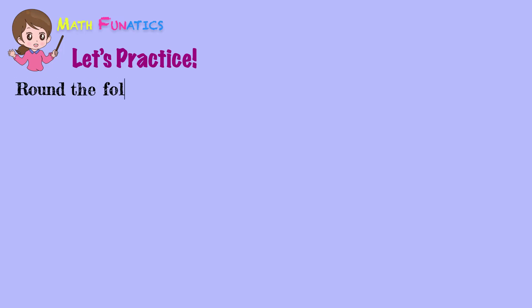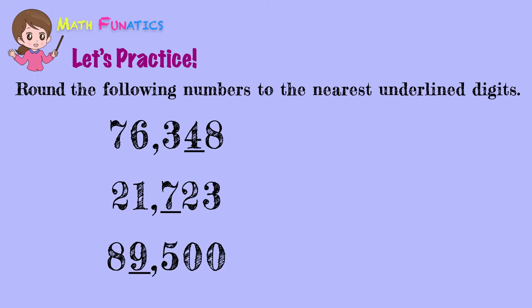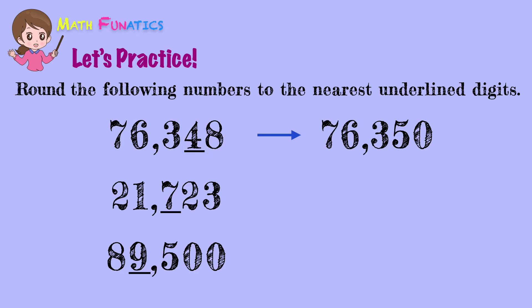Now, let's practice what we've learned about rounding off whole numbers. Round the following numbers to the nearest underlined digits. The first number has to be rounded to the nearest tens place. The digit to the right of the rounding place is 8. Since it is more than 5, we have to round up the number. Change 8 to 0, then add 1 to 4 which is the digit in the rounding place, and copy the rest of the digits on the left. So, the rounded value is 76,350.